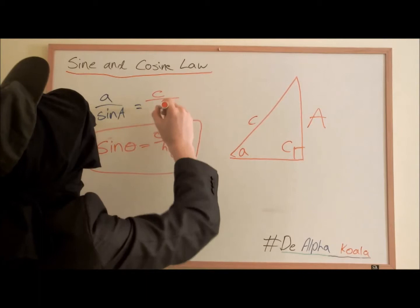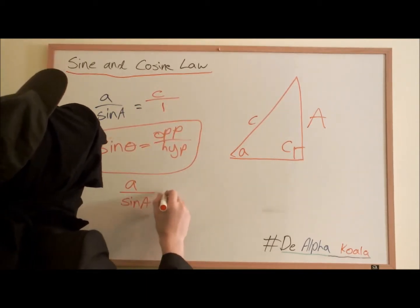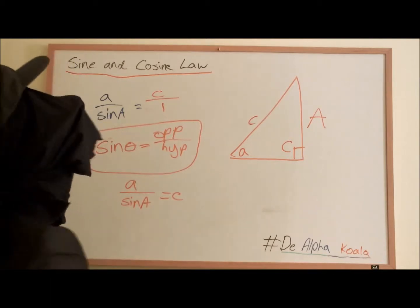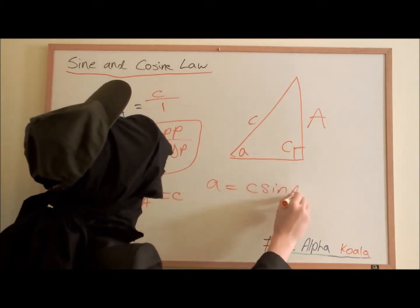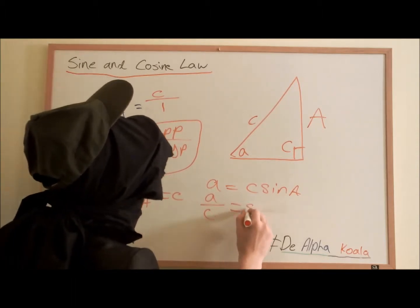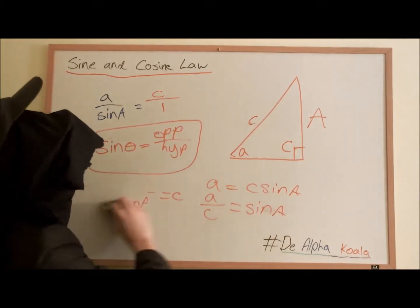We can just put that in your calculator and check if you don't believe me. So A over sine A is equal to C. And if we rearrange that, A equals C sine A. A over C equals sine A. Alright. So we got A over C equals sine A after a little bit of rearrangement.